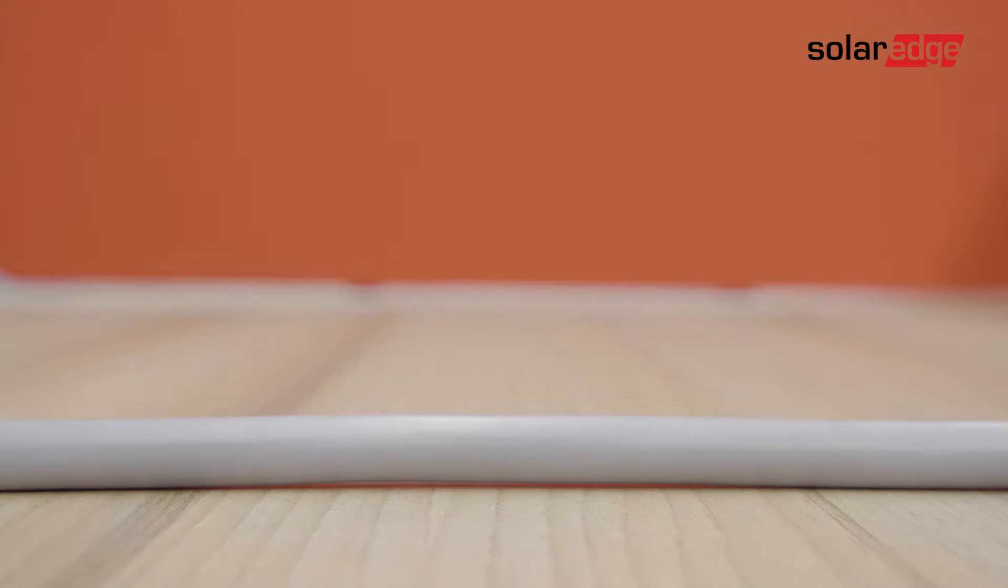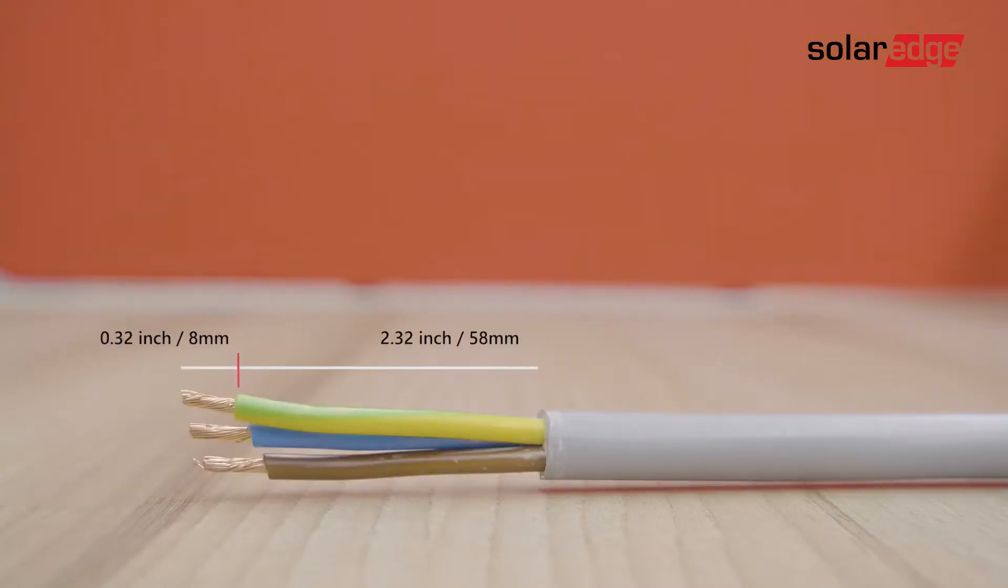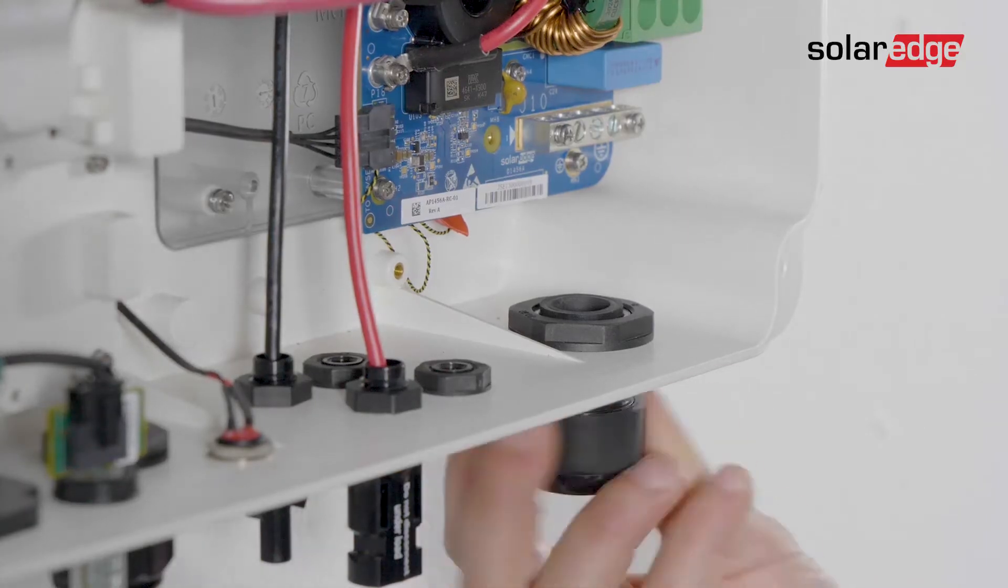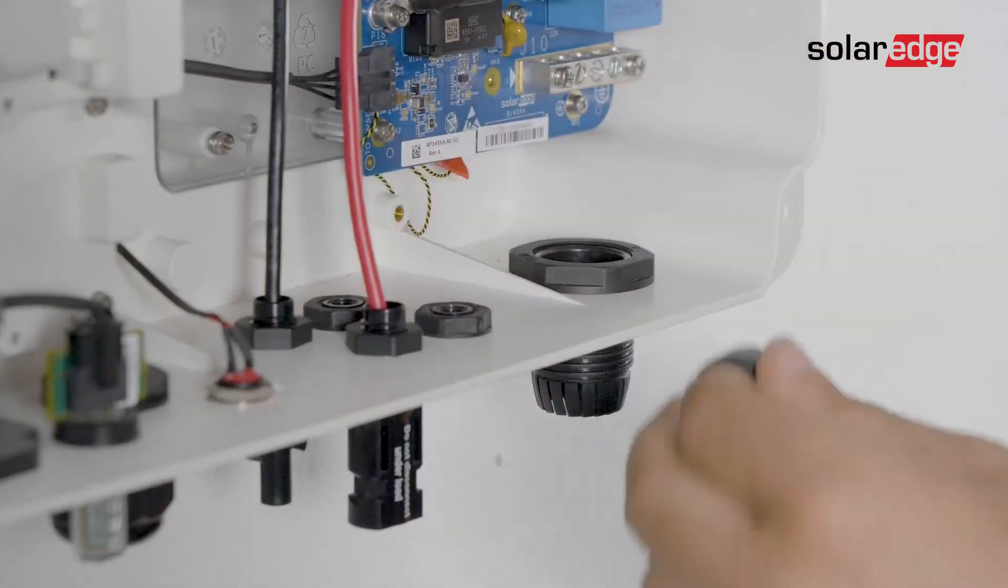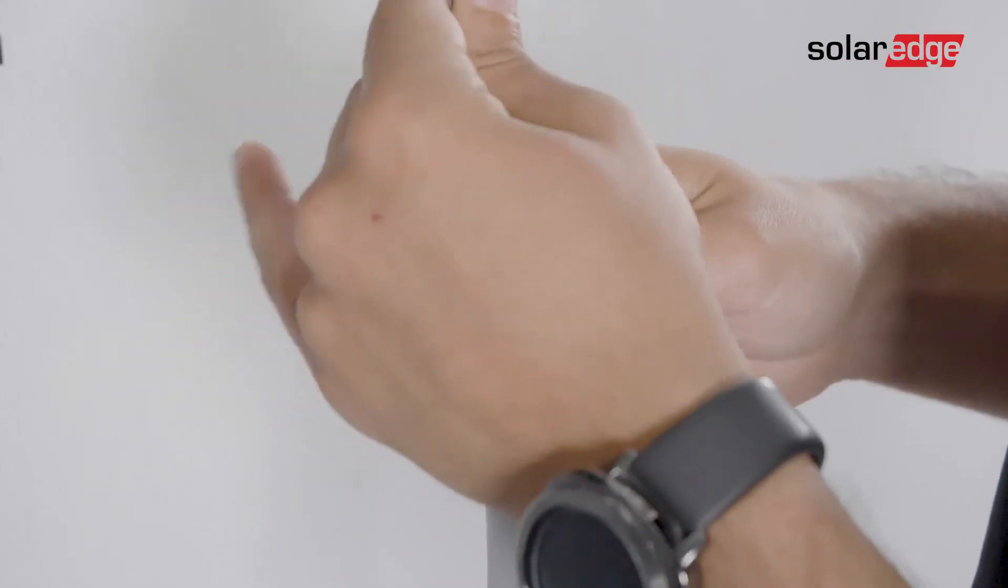Let's connect the AC grid cable. Strip the required length of the external and internal cables insulation. Open the AC cable gland. Now insert the cable through the AC gland.